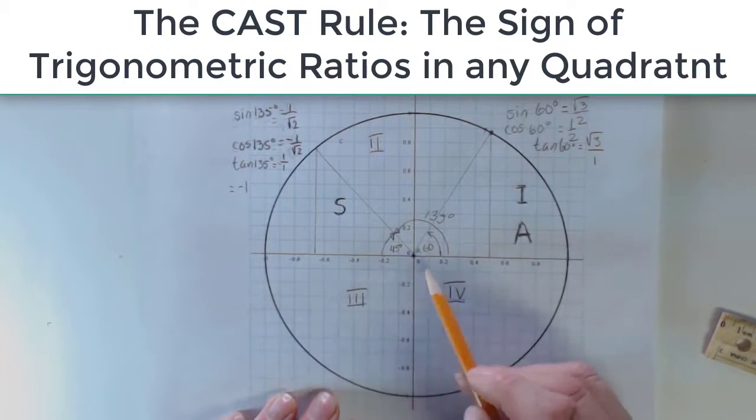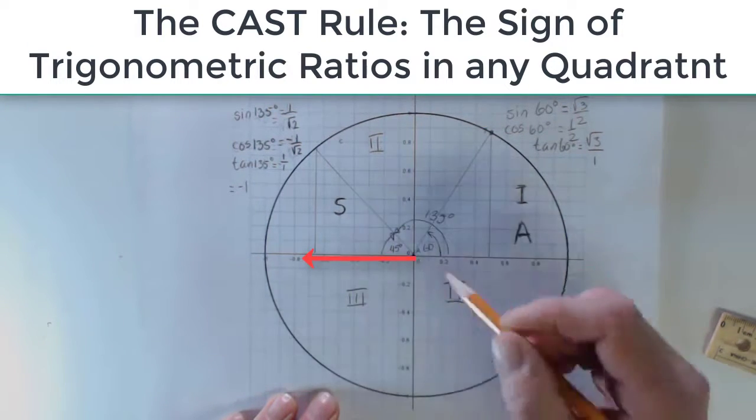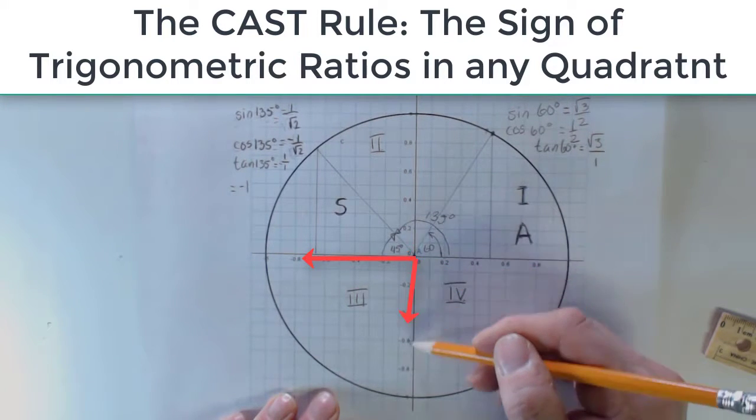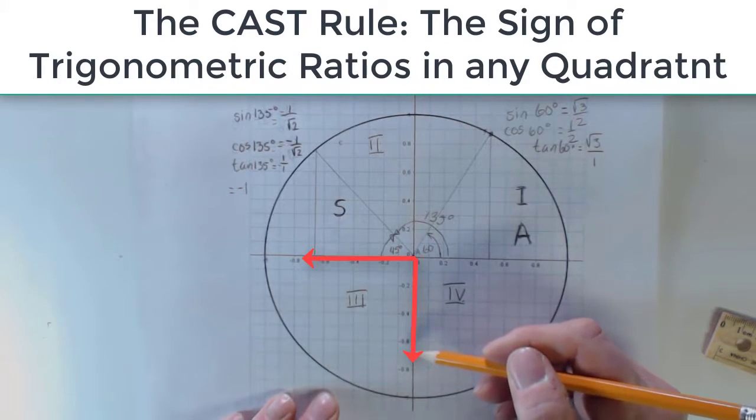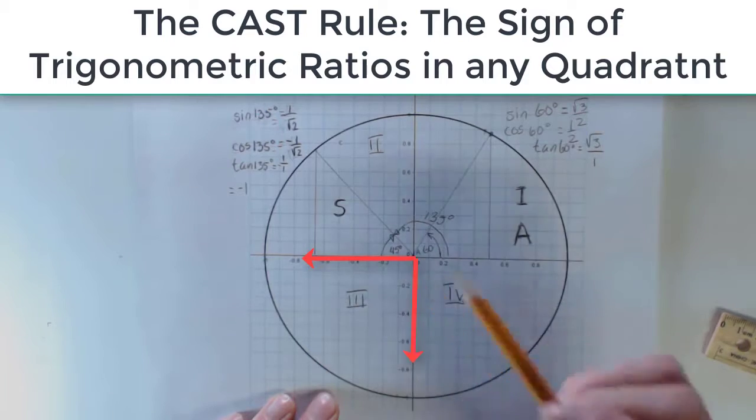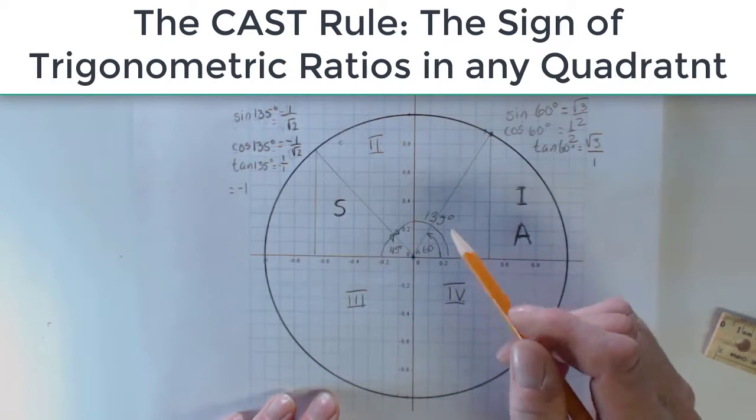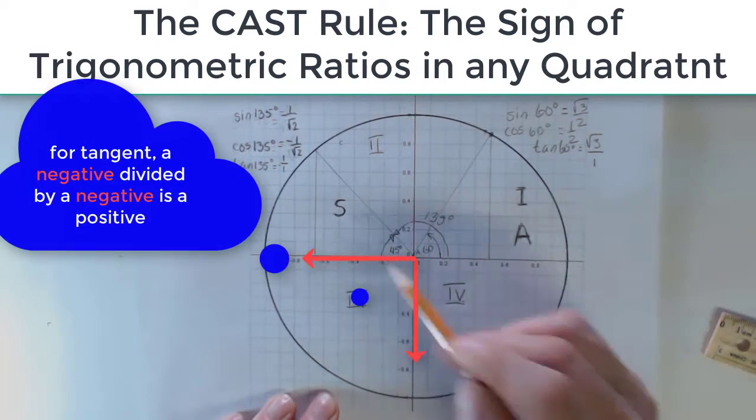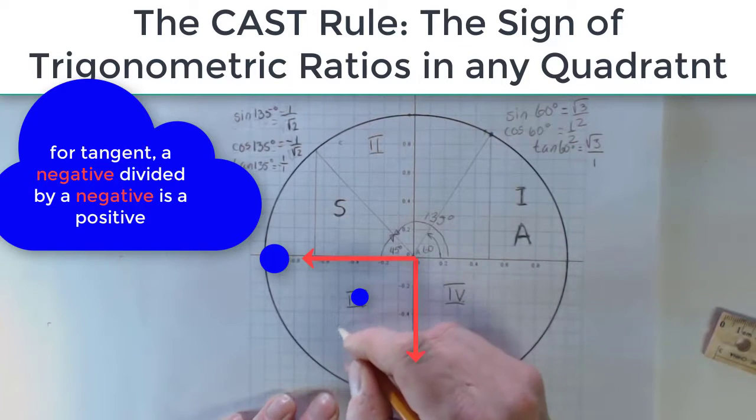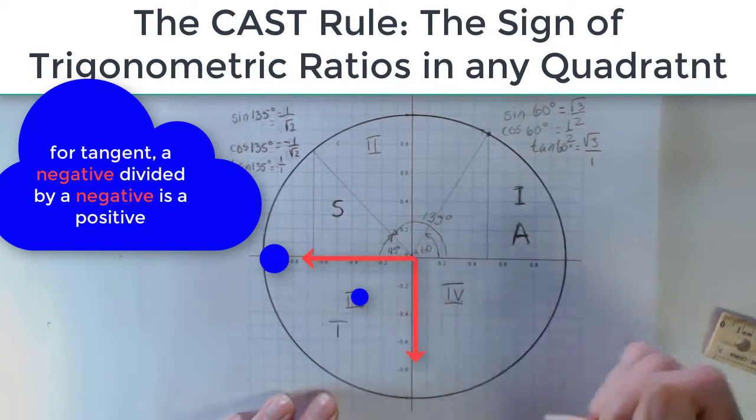Down here in quadrant 3, cosine is negative, because I am going in the negative x-direction. Sine is also negative, and so neither of them are positive. But when I take my opposite side and divide it by my adjacent side, I get a positive value. And so this is tangent.